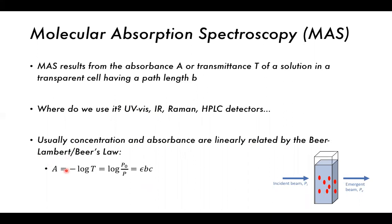Absorbance is equal to minus log to the base 10 of the transmittance. That's equal to log of P0 over P, where P0 is the incident beam and P is the emitted beam. That is eventually equal to Epsilon BC, where Epsilon is the molar extinction coefficient. B is the path length — the distance or width of the cell the light passes through — and C is the concentration of the species. So concentration plays a large role in determining the absorbance of a particular component.